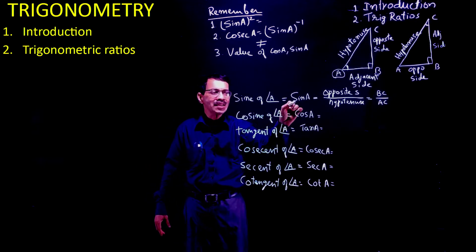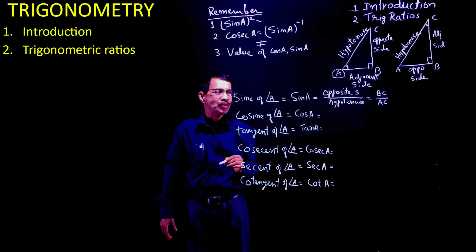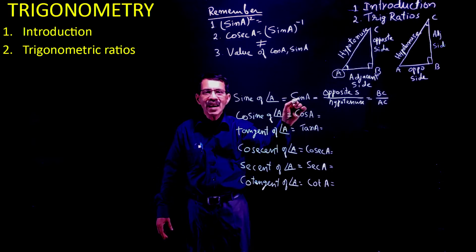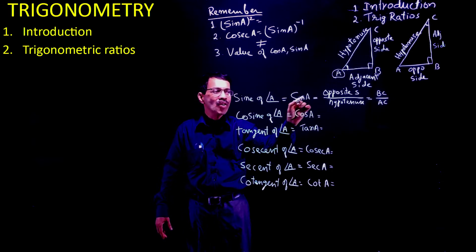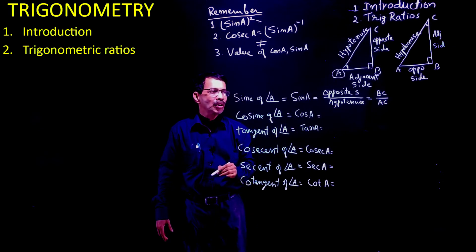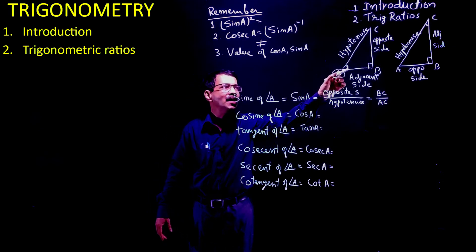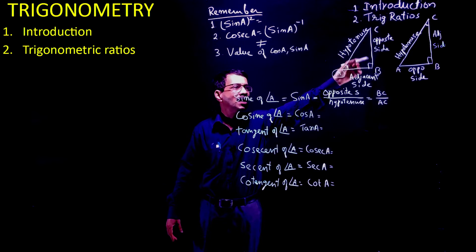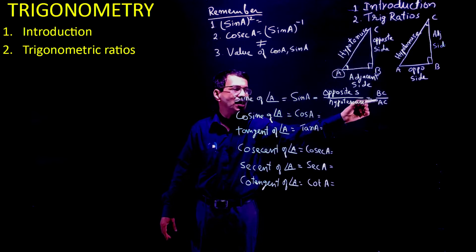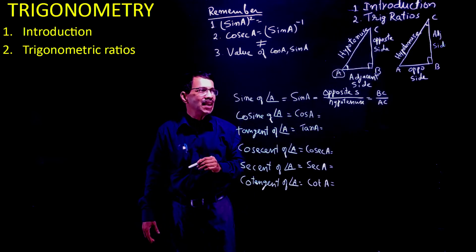First let us define sine A. Sine A is defined as opposite side divided by hypotenuse. What is the opposite side of angle A? It is BC. So sine A equals BC upon AC, where AC is the hypotenuse.